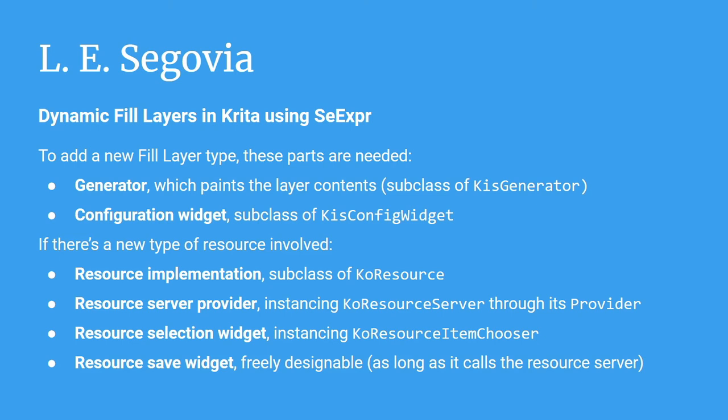This is done in four steps. First, you expose a new resource as a subclass of KoResource. Then Krita must be made aware of it through a suitable extension of its resource server. Next, to make it selectable, you need a selection widget. Krita provides a widget for this purpose — KoResourceItemChooser — that can be instantiated with the resource type.